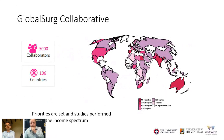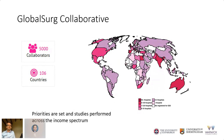Over the last five years, through a network of colleagues starting in Birmingham, we've built a collaborative now 5,000 clinicians strong across over 100 countries, all dedicated to the improvement of surgical care worldwide. We do research driven by the priorities of those living in low and middle income countries, not those in high income countries.